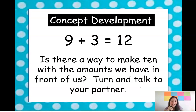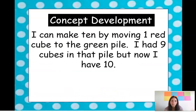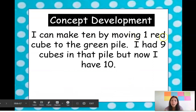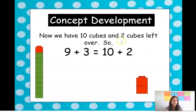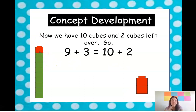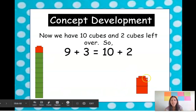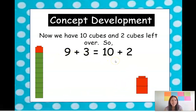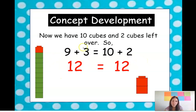Is there a way to make a ten with the amounts that we have in front of us? We have nine. I can make a ten by moving one red cube to the green pile. So if we have nine cubes in the green pile and we had three red, if we take one over, now nine and one more gives us ten. So now we have ten on one side plus two. These are equal — I did not add any cubes, we're still using 12 cubes. We just changed how many was in each group. So the answer of nine plus three is 12, and we get the same answer for ten plus two: 12.